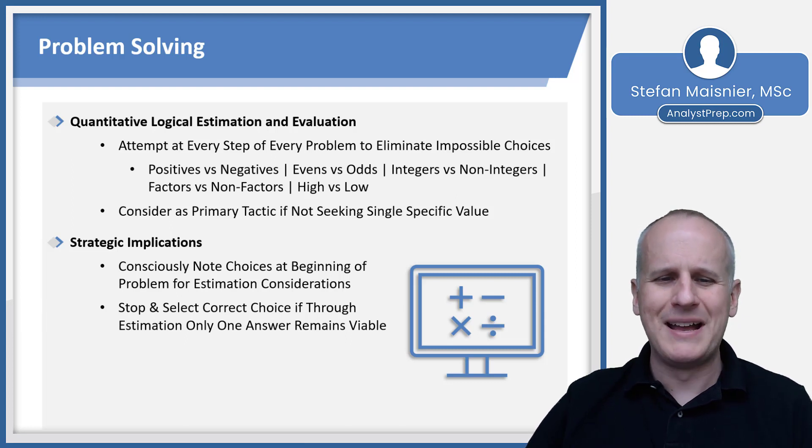Then you can stop and select the correct choice through estimation as soon as only one answer remains viable. You don't have to keep going. You may see in some of these lessons that we do just to illustrate everything, but very often you'll reach a point in your evaluation where only one answer is left, and the exam is designed in such a fashion that it is intended that you choose the right answer as soon as it becomes readily apparent that only one option is viable.